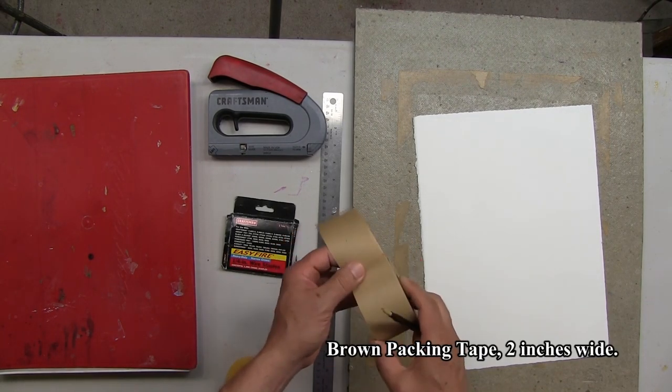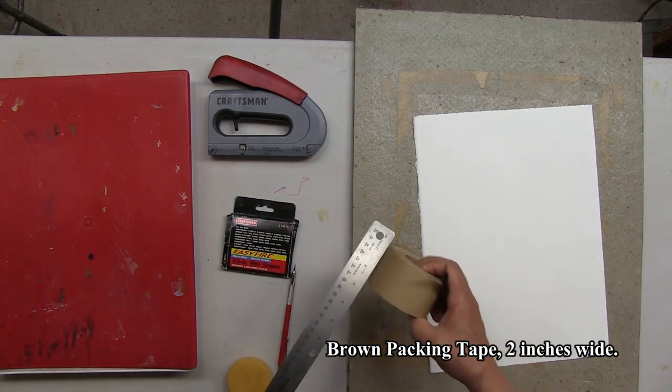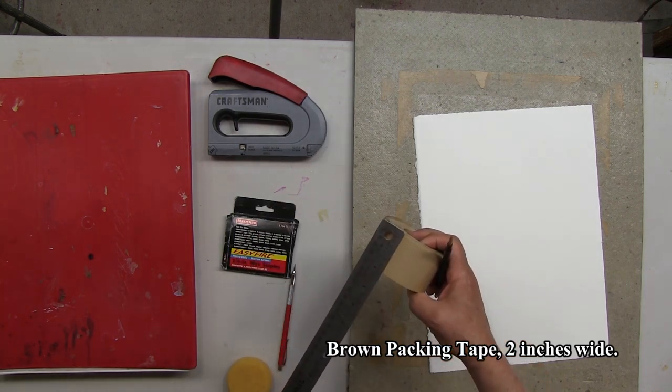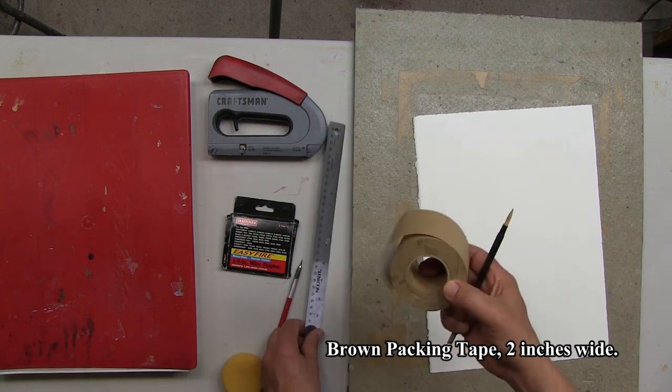This is a sheet of brown packaging tape. It's large. It's two inches. This is perfect for stretching watercolor paper.